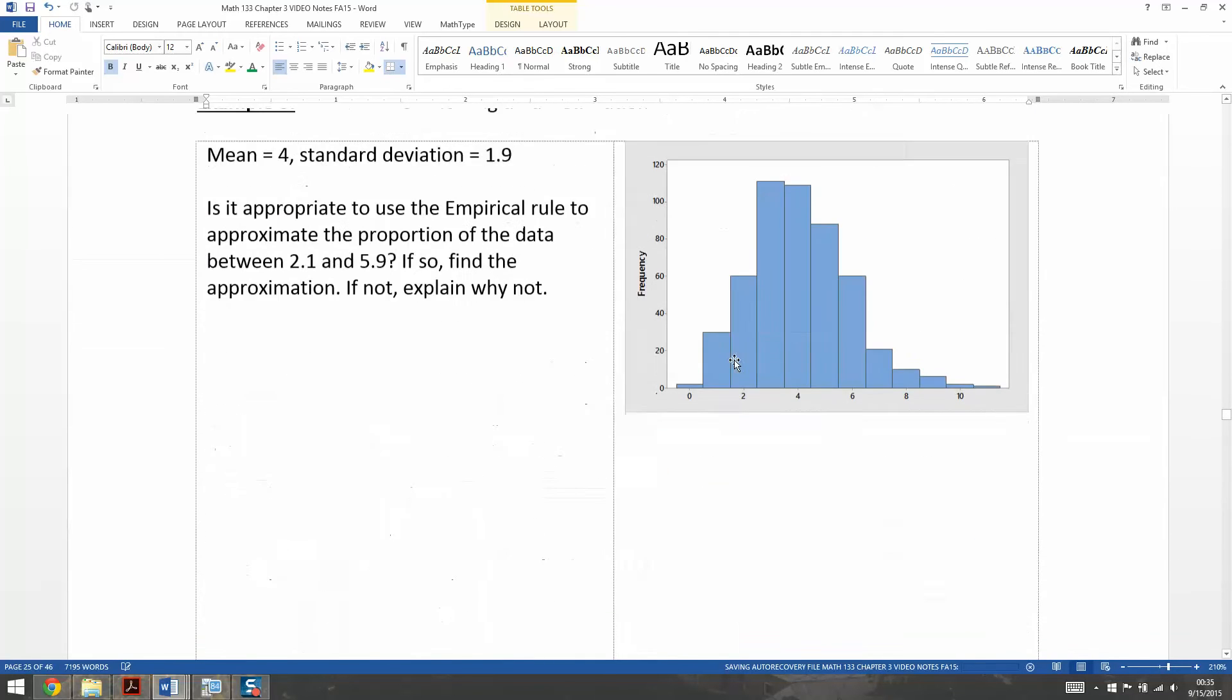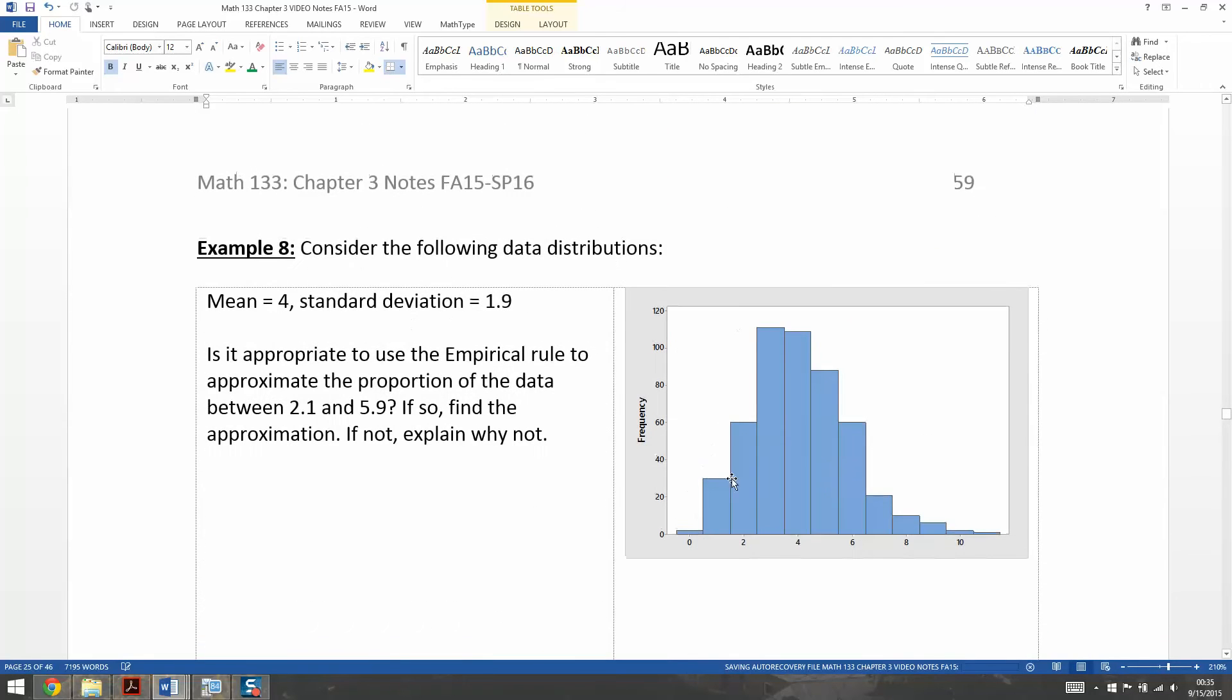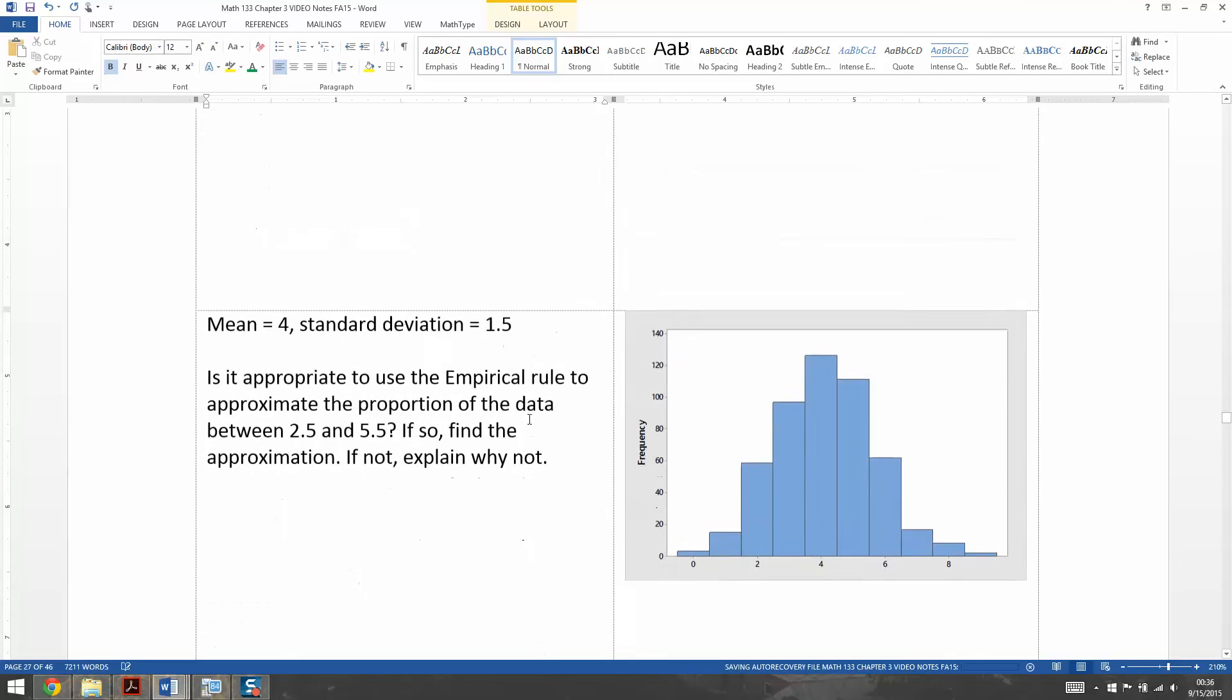Let's look at these two graphs right here. This top one is not bell-shaped. It's skewed right. That means it's not appropriate to use the empirical rule. Not appropriate to use the empirical rule because the data distribution is skewed right, not bell-shaped. It's not a normal distribution, therefore we can't use the empirical rule. Done. That was pretty easy. Let's see if the next one's so easy.